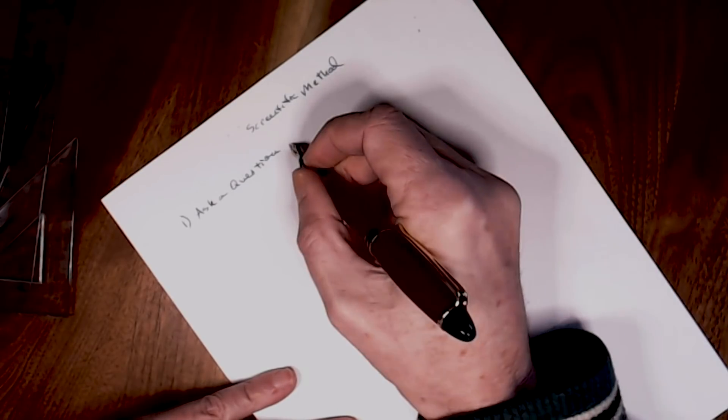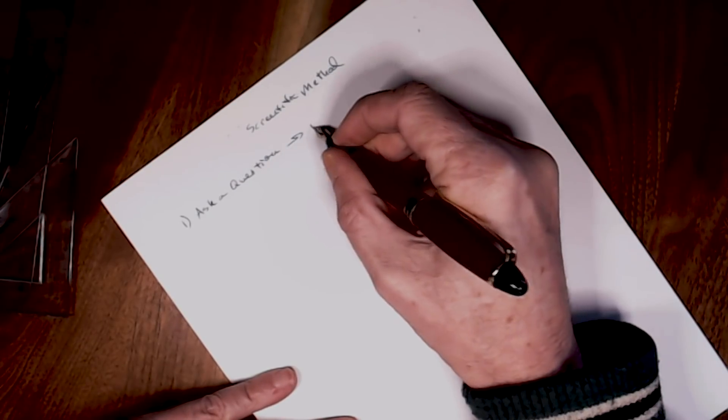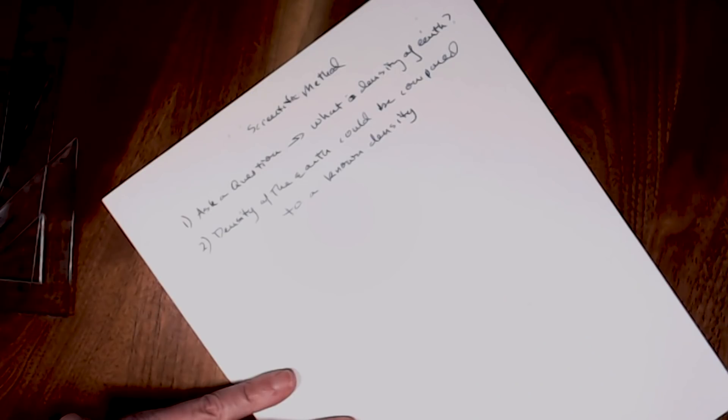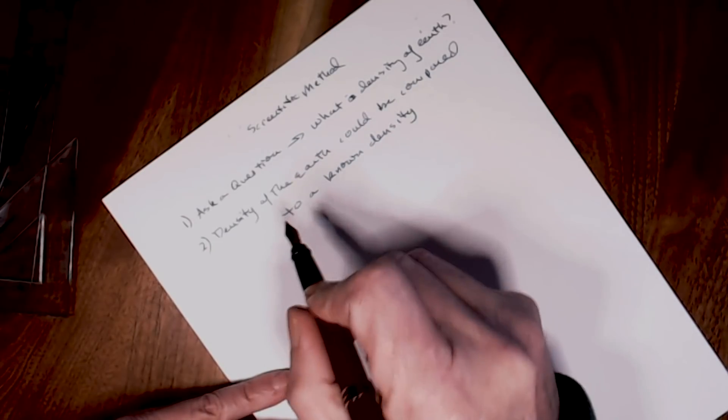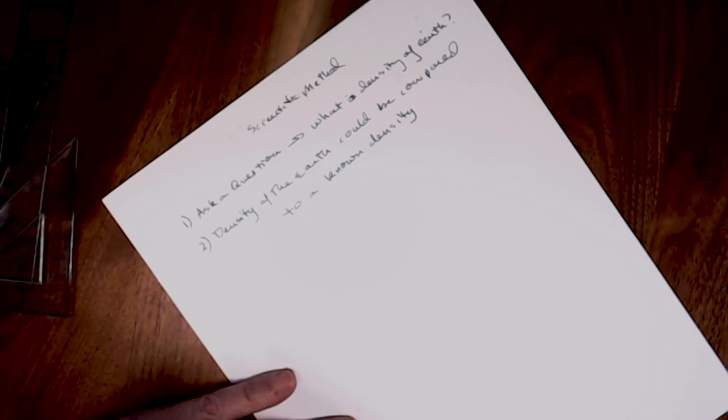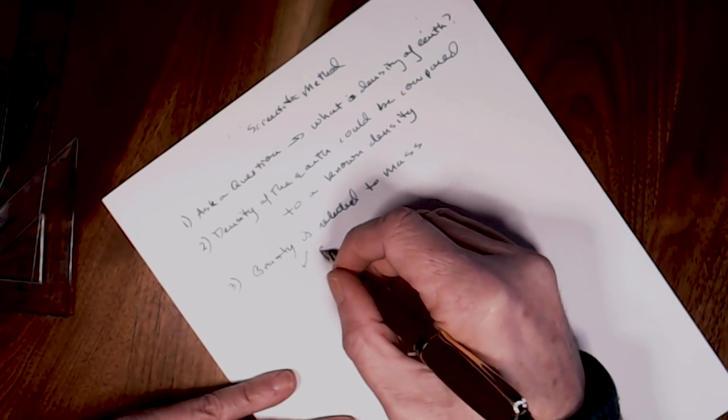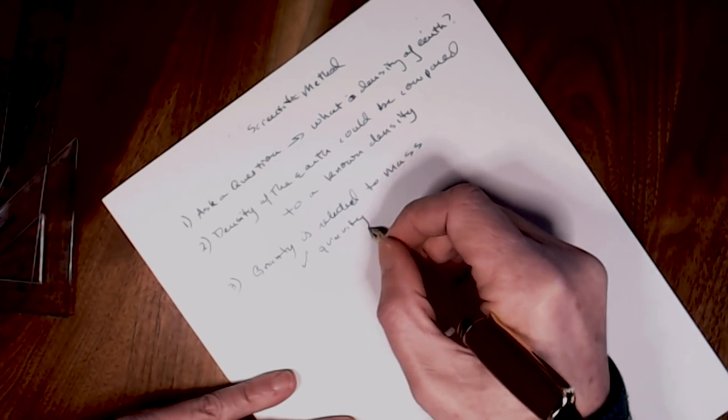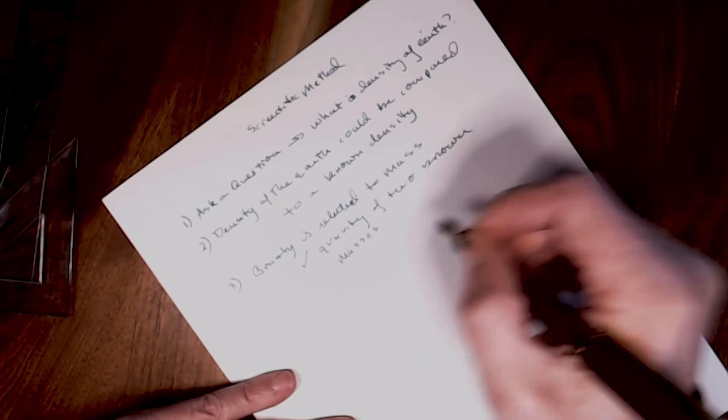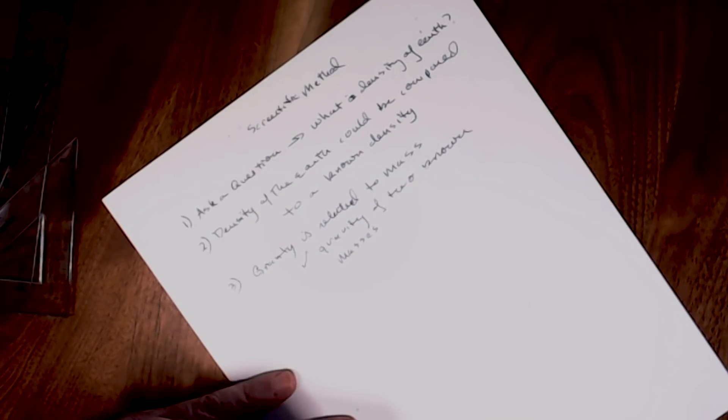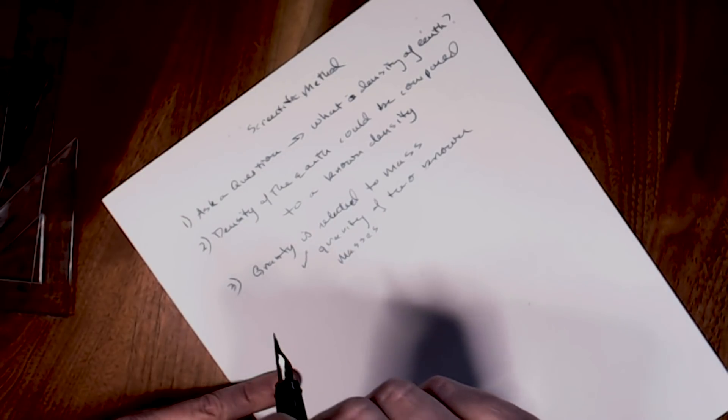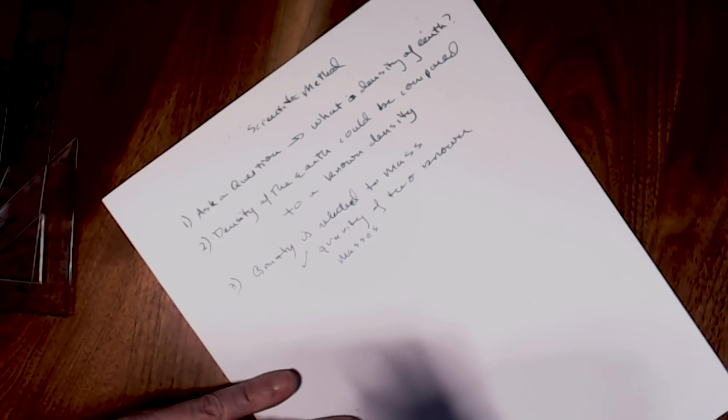And for Cavendish, what he wanted to know was what is the density of the Earth? And his proposed answer is that the density of the Earth could be compared to something with a known density. If he checked the gravitational attraction of two known masses and compared them to each other, he could get an idea of what the density of Earth would be relative to the density of water.